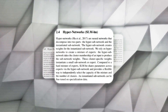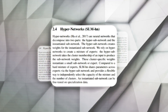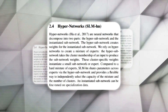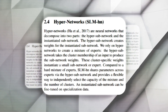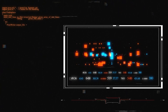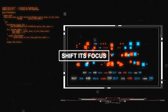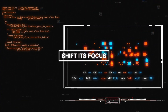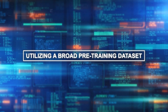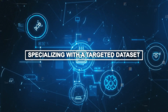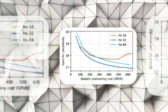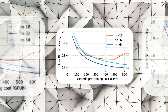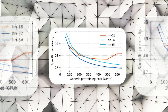Then there are hypernetworks, which represent a flexible approach where one network generates parameters for another, allowing for dynamic adjustments to different tasks. This adaptability means a model can quickly shift its focus depending on the domain, utilizing a broad pre-training dataset and then specializing with a smaller, targeted dataset. Hypernetworks cut down on inference costs by maintaining high performance without the need for constant retraining.